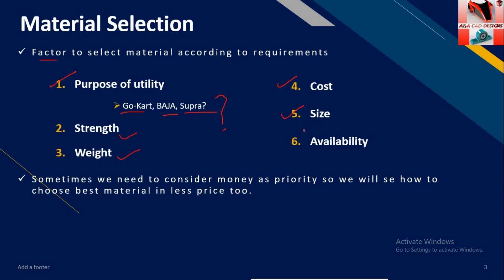Size also plays a small role in weight, according to the thickness and diameter of the structure. Availability sometimes plays a major role for some teams, because due to shortage of material they may have to spend almost two times more money. So I recommend you to check availability in the market as well, along with all these factors.